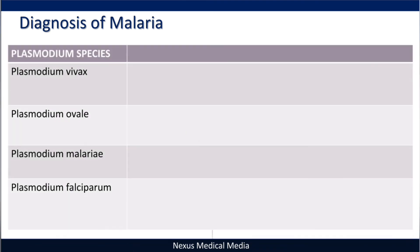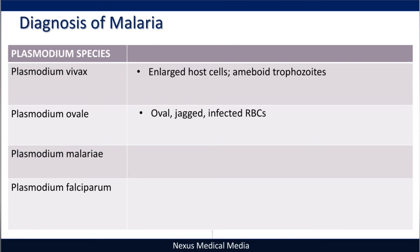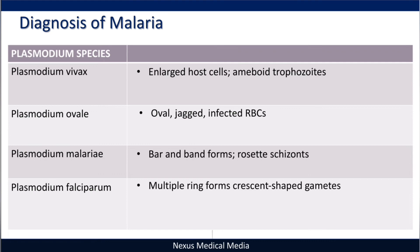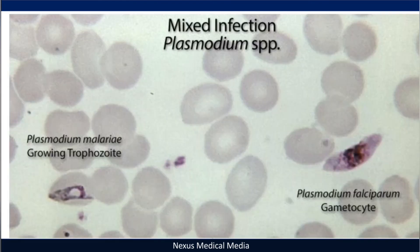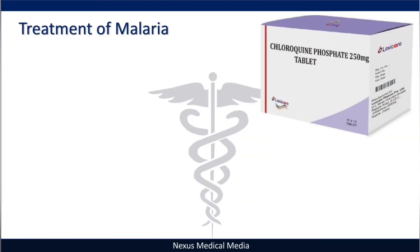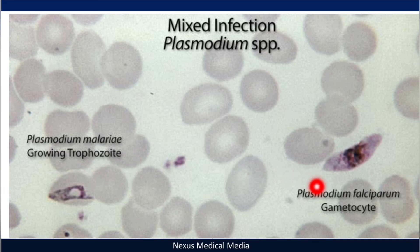On the blood smear: Plasmodium vivax shows enlarged red blood cells with amoeboid trophozoites; Plasmodium ovale shows oval jagged infected red blood cells; Plasmodium malariae shows band and bar forms and rosette schizonts; Plasmodium falciparum shows multiple ring forms and crescent-shaped gametocytes. Mixed infections can also be identified on the smear.